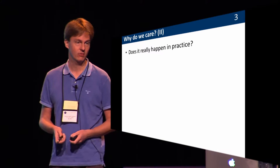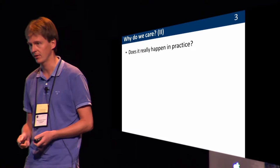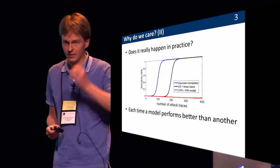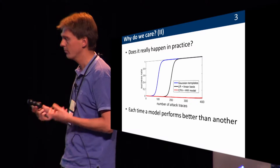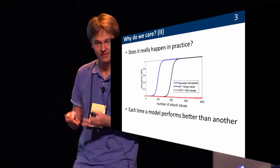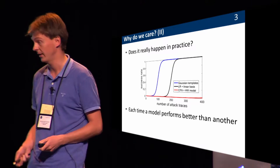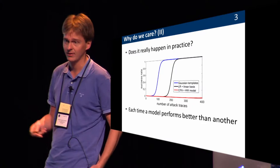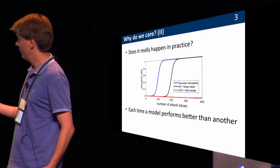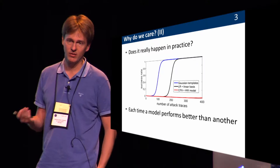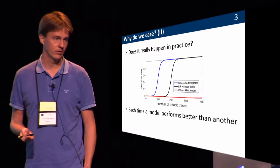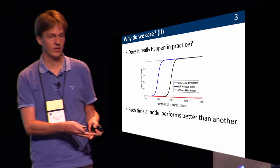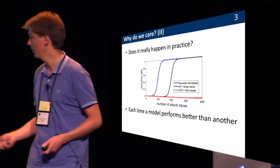You can say maybe it just never happens that we have a bad model. I would argue that it happens essentially all the time. It's easy to see each time you have a model that performs better than another one — that's exactly the situation we are here. For example, CPA with Hamming weight leakage model was not good at all. If you had stopped there, the conclusion could have been the device looks secure, but in fact it was just a bad model.